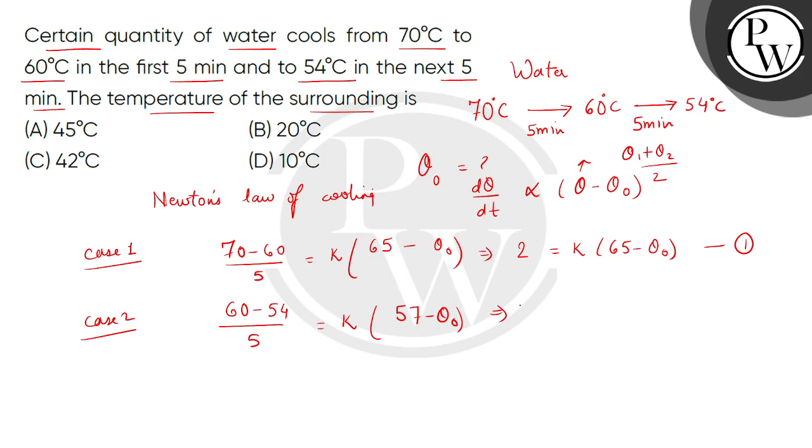Case 2: 1.2 equals to K times 57 minus theta naught.